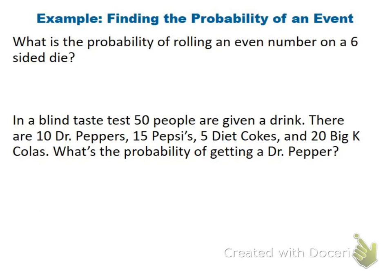For the first example, what's the probability of rolling an even number on a six-sided die? Even numbers are two, four, and six, so there are three even numbers out of six total, which reduces down to one-half, or 50%.